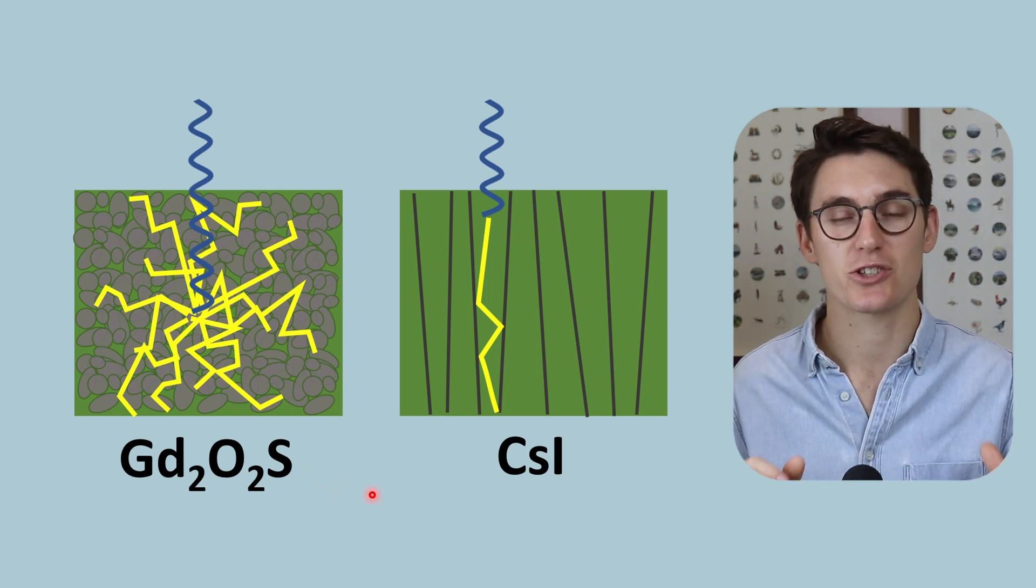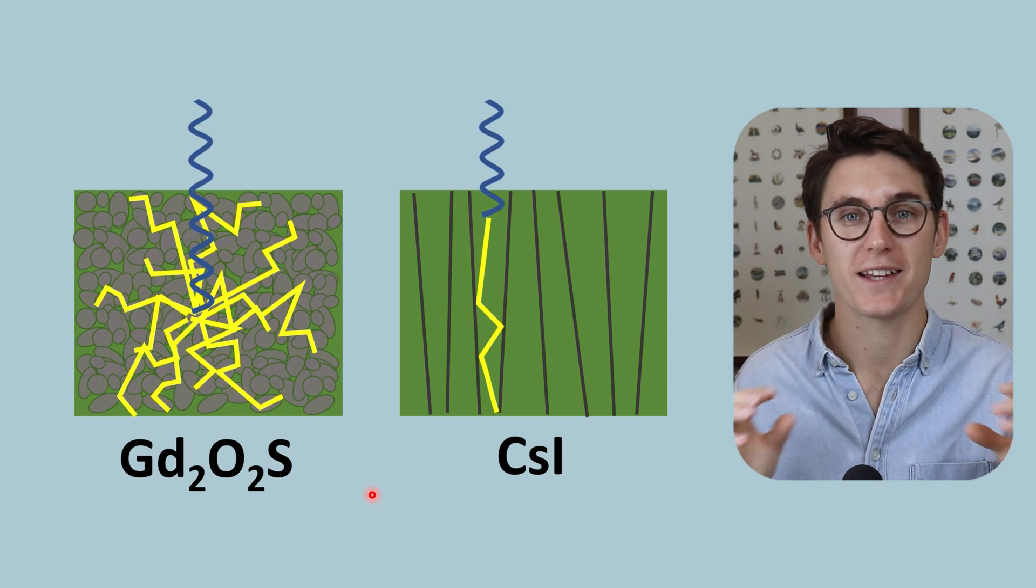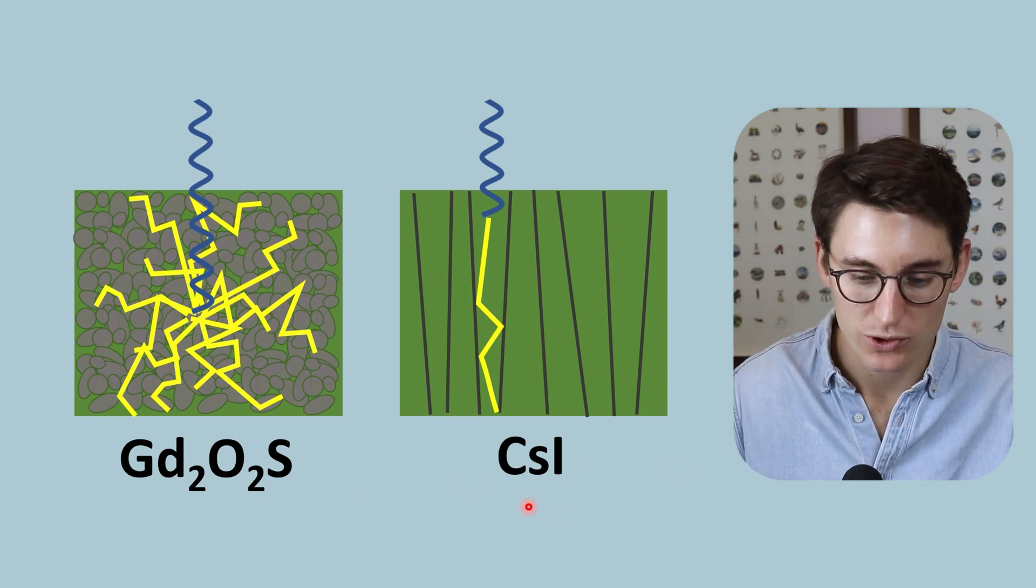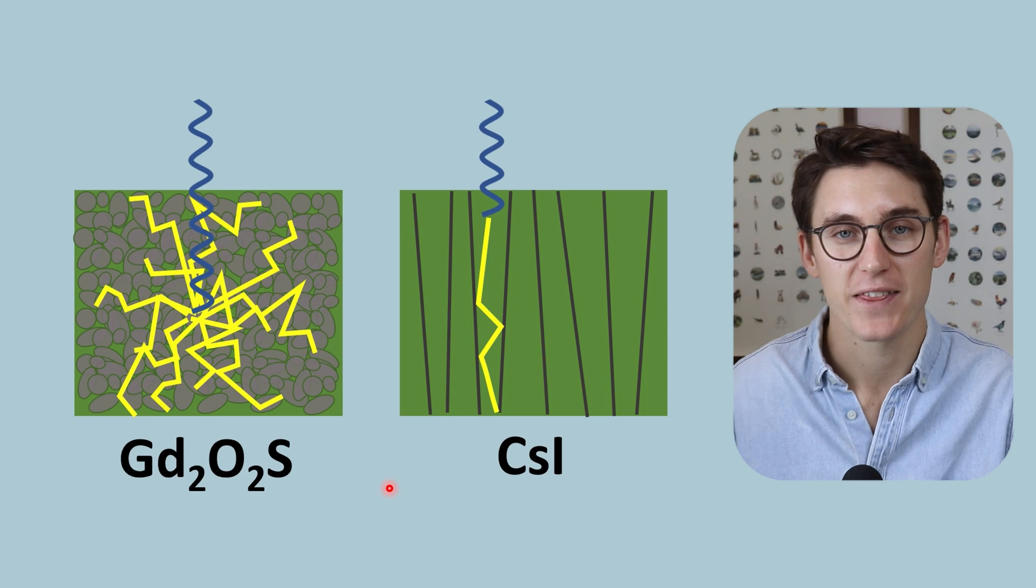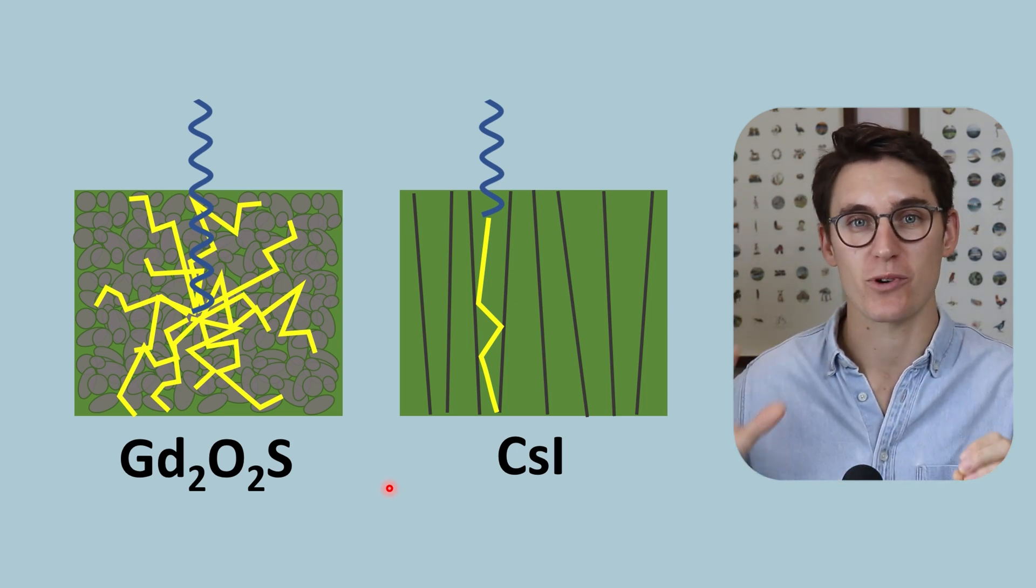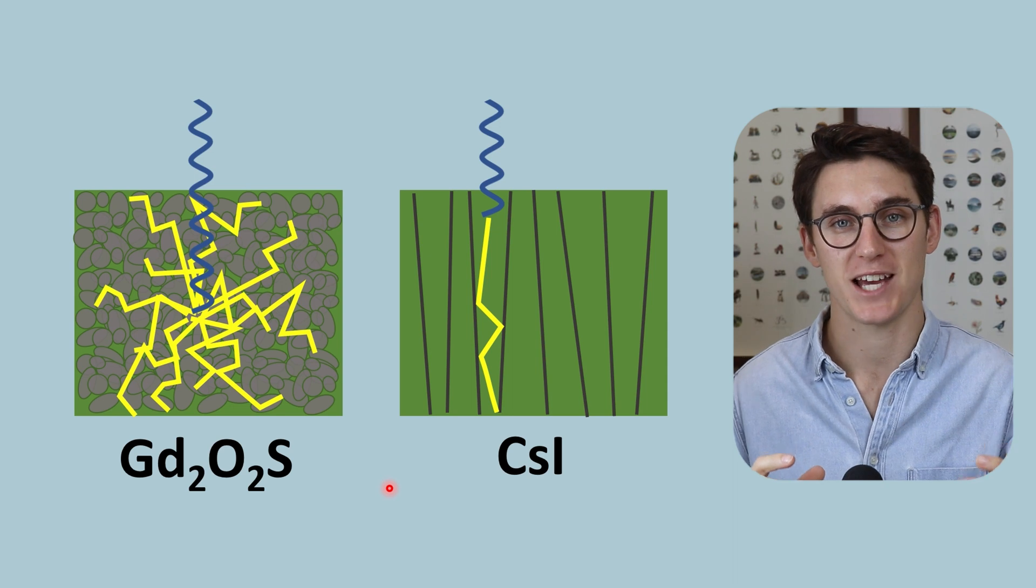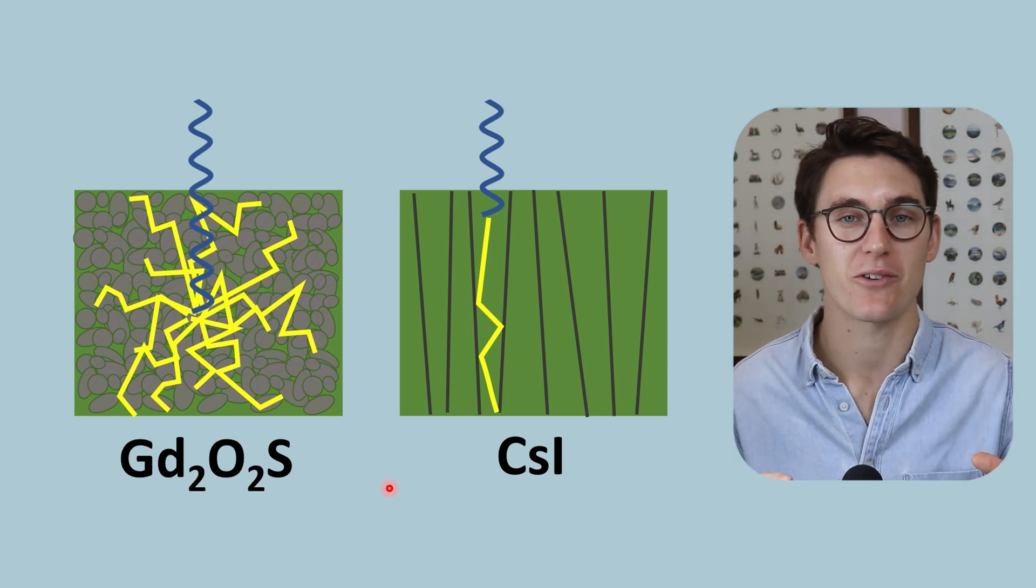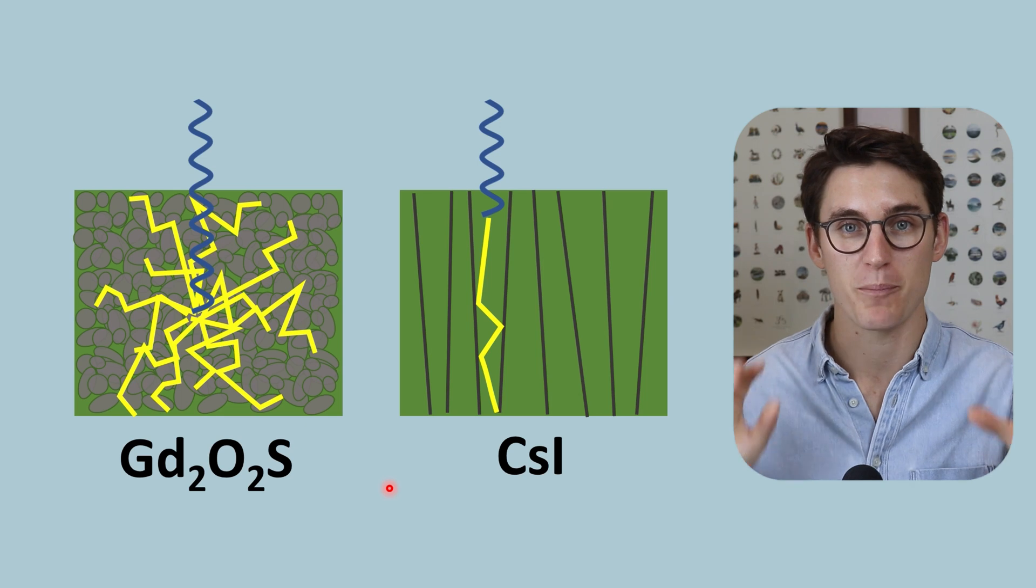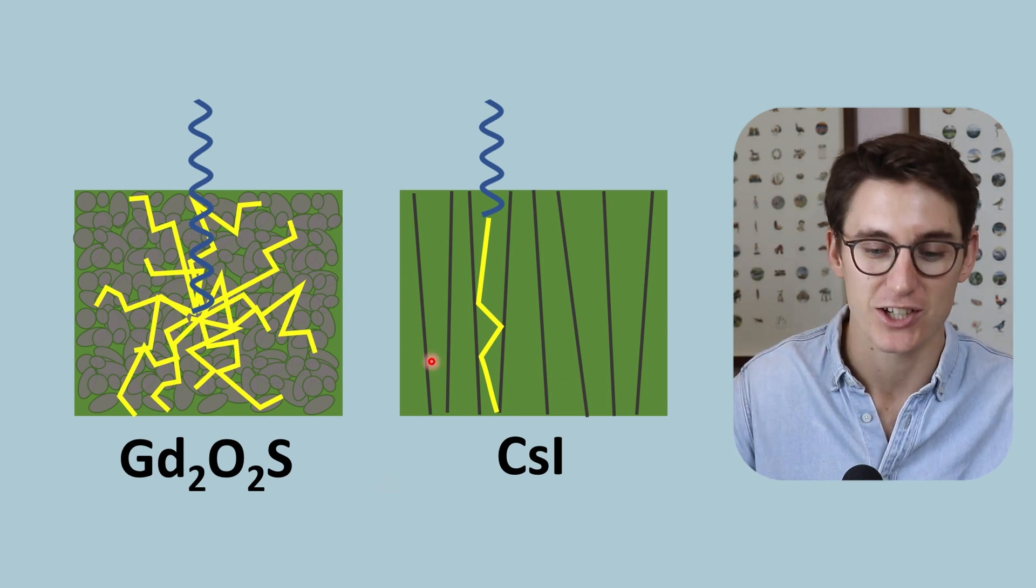So our indirect digital radiography systems require this scintillation layer, and we use cesium iodide in that scintillation layer. That is what separates it from our direct digital radiography systems. And that's a common question that comes up in exams. What's the difference between indirect and direct digital radiography systems? And the main difference is this scintillation layer.